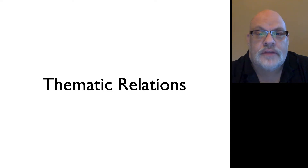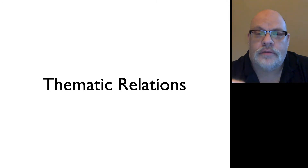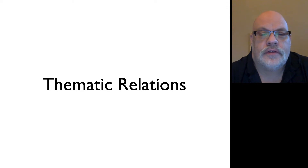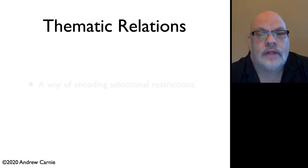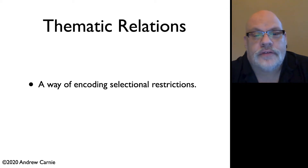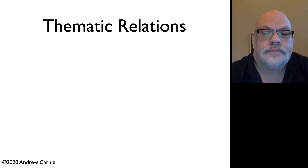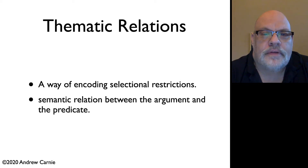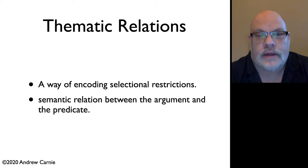In particular, we talked about two different kinds of restrictions: subcategorizational restrictions, or categorial restrictions, and selectional restrictions, which are effectively semantic restrictions. In this unit, we're going to talk about thematic relations. Thematic relations are a way of encoding selectional or semantic restrictions. They represent the particular semantic relationships between an argument and a predicate.